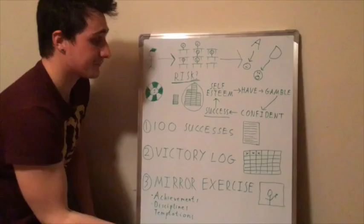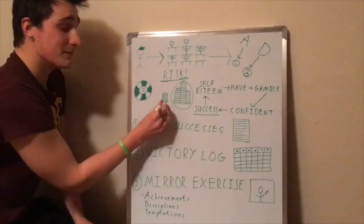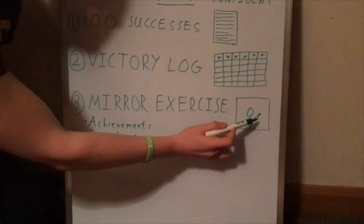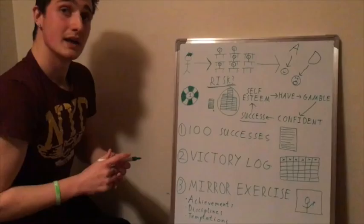Technique number two is the victory log. All this involves is getting yourself a calendar or a journal and every day recording the victories that you experience. Now, it doesn't matter how small or stupid you think these victories might be. Because through doing this, you add to the chips that you have in your self-esteem pile.